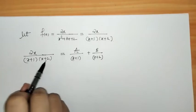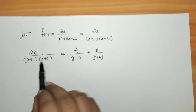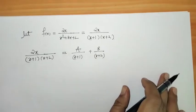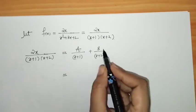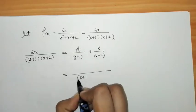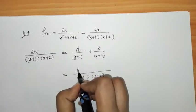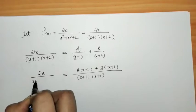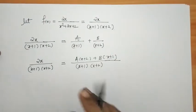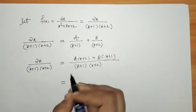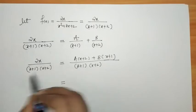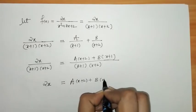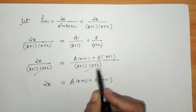The degree of the denominator is two, so we take two constants A and B. We simplify by cross multiplication, giving denominator (x+1)(x+2) on both sides. This yields: 2x = A(x+2) + B(x+1). Since the denominators on both sides are the same, we can cancel them out.